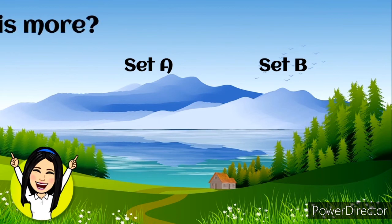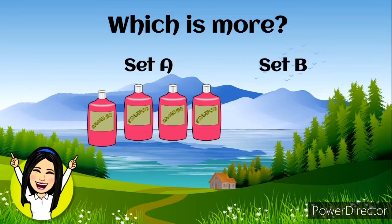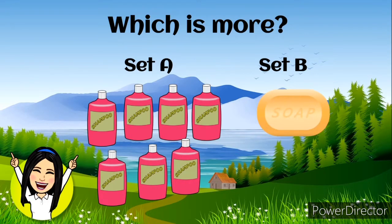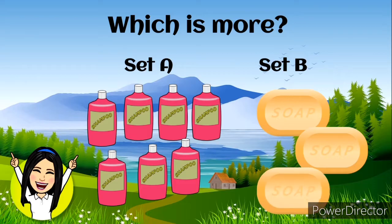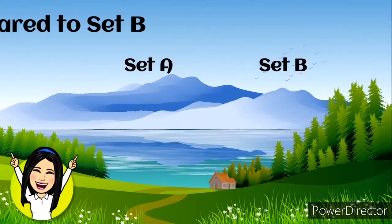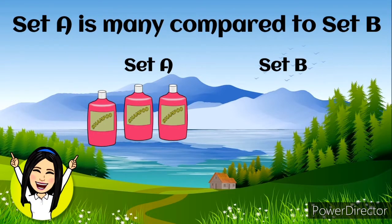Now here's another. Which is more? Let's take a look. Set A has seven shampoos and set B has three soaps. Which is more? All right, set A is many compared to set B.